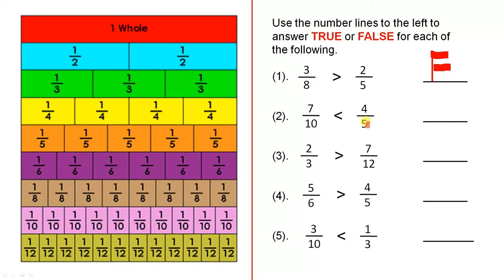7 tenths is less than 4 fifths. Let's see where 7 tenths are — 1, 2, 3, 4, 5, 6, 7 — so there's 7 tenths. Now where's 4 fifths? 1, 2, 3, 4 — so there's 4 fifths there. 7 tenths is there, and here we have 4 fifths. So 7 tenths is less than 4 fifths — that is true.